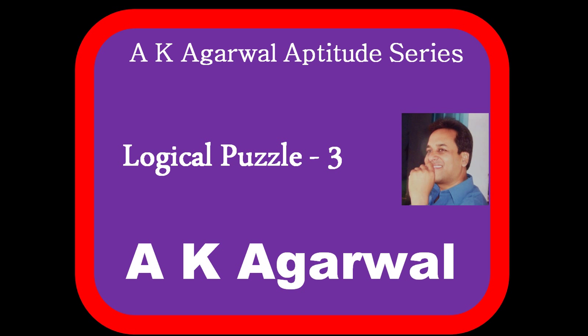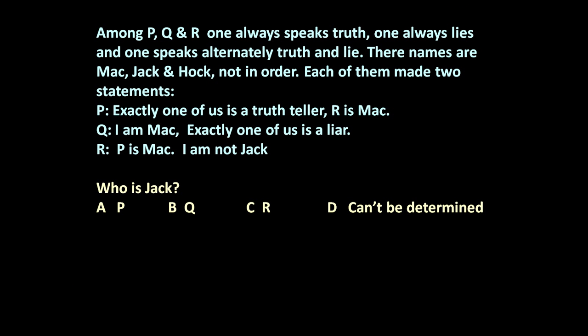Hello friends and welcome to AK Agrawal aptitude series. In this session we are going to learn a technique for solving a logical puzzle. The given puzzle is: among P, Q, and R, one always speaks truth, one always lies, and one speaks alternately truth and lie. Their names are Mac, Zack, and Hawk, not in order. P says: exactly one of us is a truth teller, and R is Mac. Q says: I am Mac, and exactly one of us is a liar. R says: P is Mac, and I am not Zack. Based on this information, you have to find out who is Zack — P, Q, R, or cannot be determined.